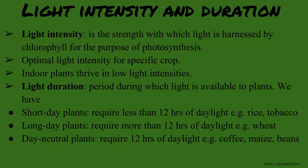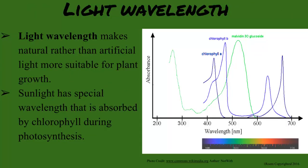Short day plants, such as rice, tobacco, and soybeans, need less than 12 hours of light. Long day plants, such as wheat varieties, need more than 12 hours. I want to guess what day neutral plants mean? They need about 12 hours of light. Correct. And such plants include coffee, maize, and beans. That is why they are mostly found around the equator. Couldn't we just put a light bulb on the plants so they weren't getting enough sun? You need a special kind of bulb. Now, that brings me to the wavelength of light. A standard light bulb is artificial light that chlorophyll does not absorb for growth. The sun's light has a special wavelength that includes ultraviolet and infrared.